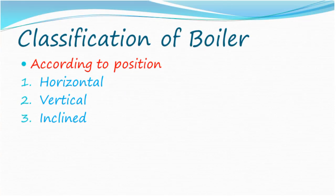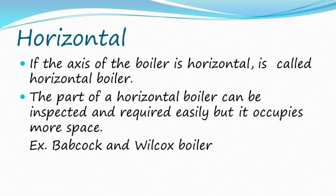Classification of boiler — according to position: horizontal, vertical, inclined. If the axis of the boiler is horizontal, it is called a horizontal boiler. The parts of a horizontal boiler can be inspected and repaired easily, but it occupies more space.